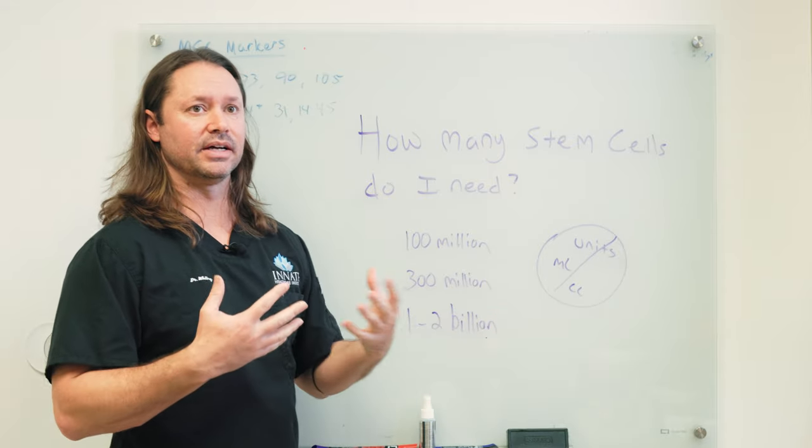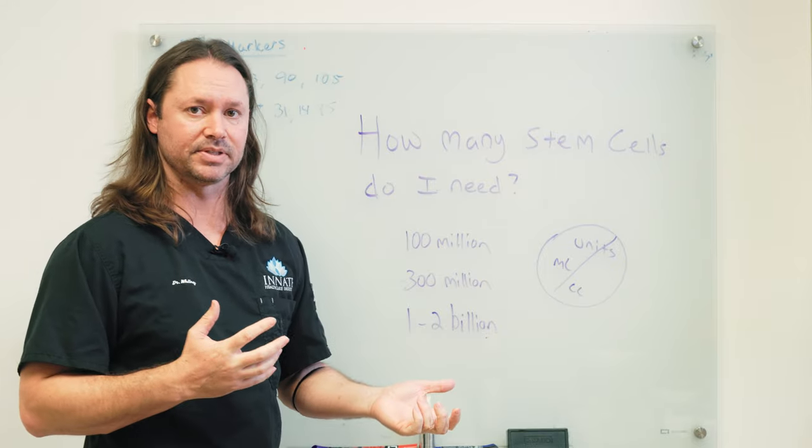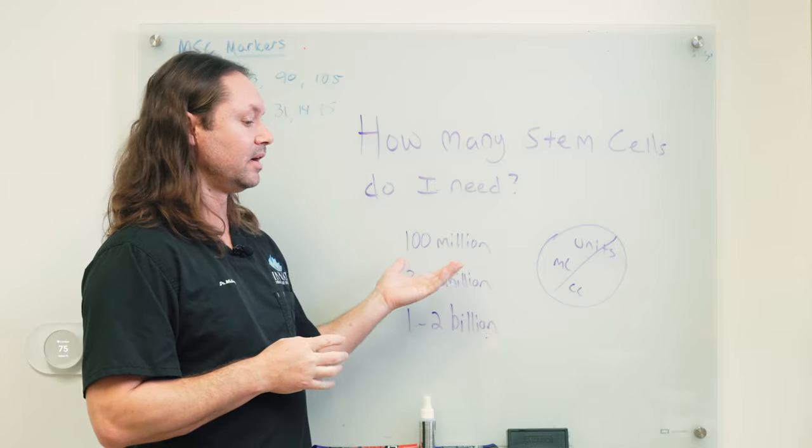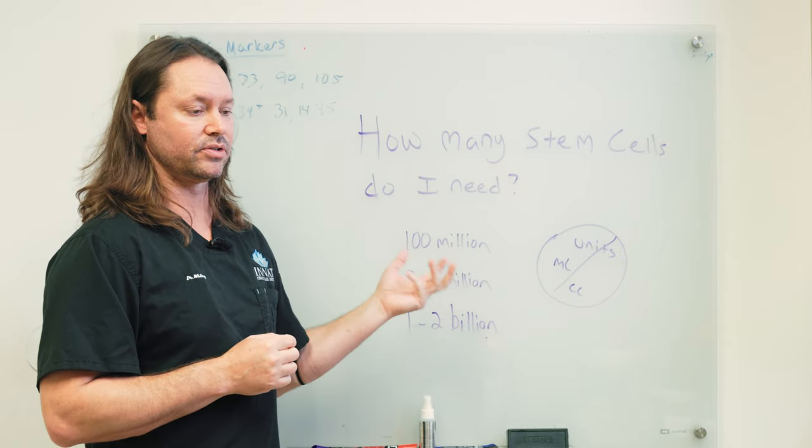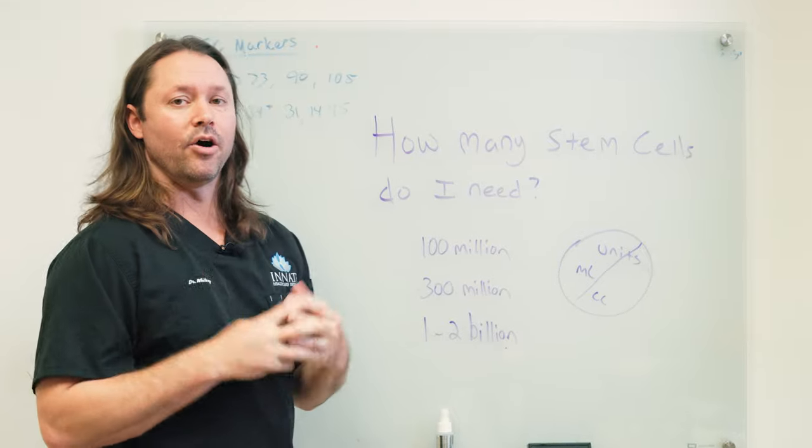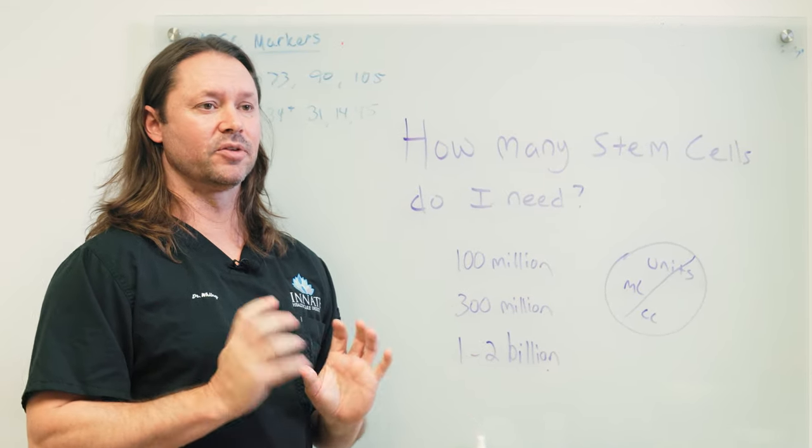So this isn't an accurate representation of really what you're getting. If somebody does say, well, I'm getting 5 milliliters, I'm going to get 3 milliliters of stem cells, you really need to know the concentration in the form of the millions that you're getting.